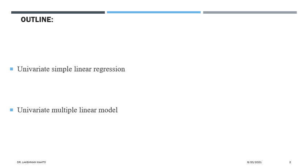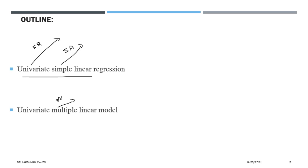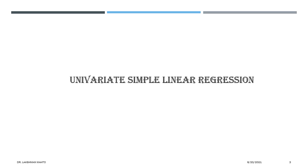After covering simple linear regression, we will talk about univariate multiple linear regression. In simple regression, there is a single attribute and a single response. Now we will complicate it a little: instead of a single attribute, we will go for multiple attributes while the response remains single.